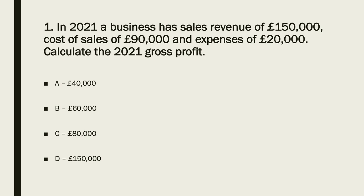The gross profit formula is sales revenue minus cost of sales. So 150,000 minus 90,000 equals 60,000. The key thing is you don't take into account expenses for gross profit — you would need to do that for operating profit. The answer to question one is B: £60,000.